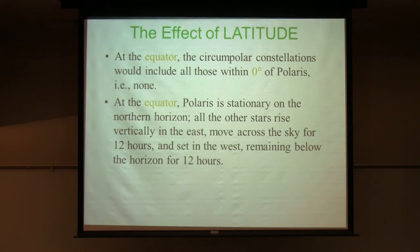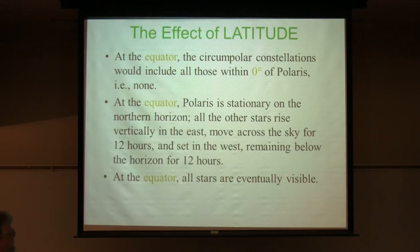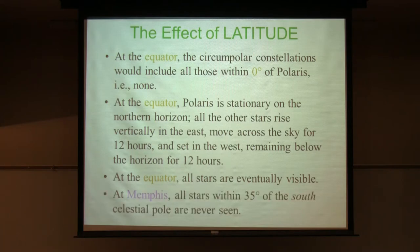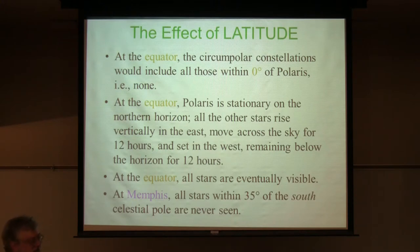At the equator, Polaris is stationary on the northern horizon. All stars rise in the east, move across the sky going straight up, are up for 12 hours, and set in the west 12 hours later, staying down for 12 hours — everything is very orderly. All the stars are eventually visible at the equator. Stars within 35 degrees of the south celestial pole — like the Southern Cross, Alpha and Beta Centauri — are never seen from here in Memphis.